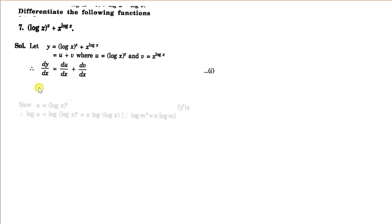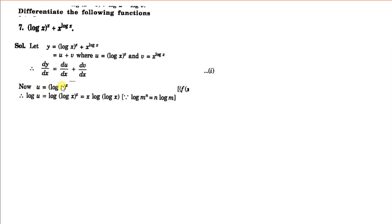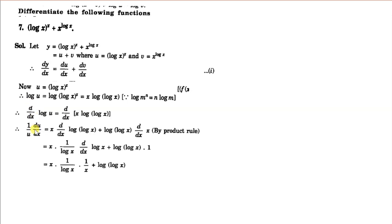Then y becomes u plus v, and dy/dx will be equal to du/dx plus dv/dx. So you can differentiate the two functions separately and then combine them. First, we differentiate u, where u is log x to the power x. Since the base and power are both functions of x, we take log of both sides: log u equals x log(log x), using the property that log(m^n) = n log m.